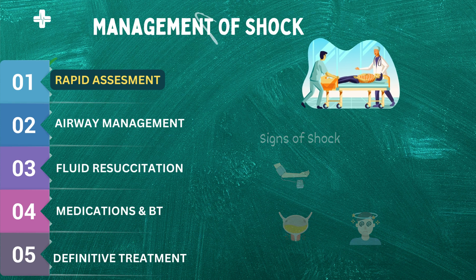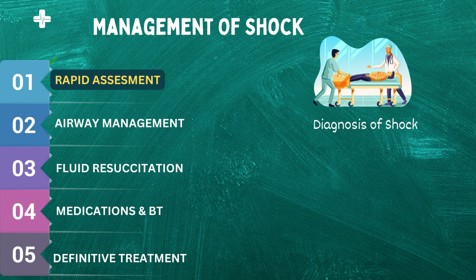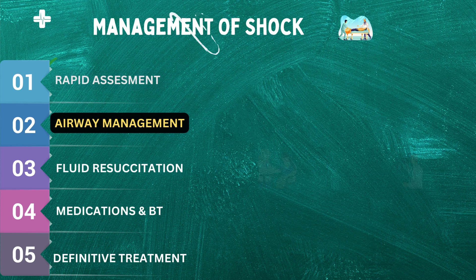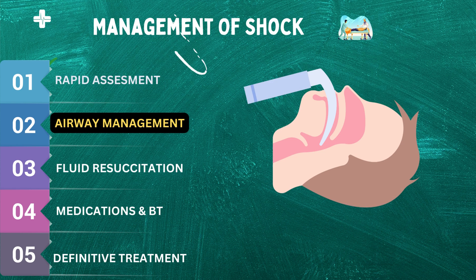Once shock is suspected, healthcare professionals will perform additional tests to identify the underlying cause. These tests may include blood tests such as a complete blood count and electrolyte panel, imaging tests such as a chest x-ray or ultrasound, and other diagnostic tests depending on the suspected cause of shock. Shock is a critical medical condition that requires prompt recognition and treatment, and airway management is a crucial component.